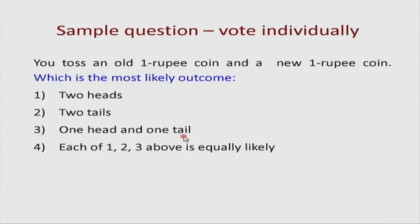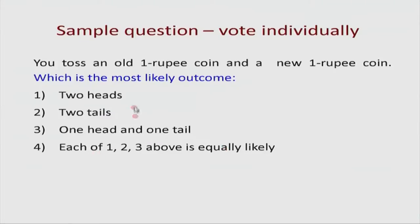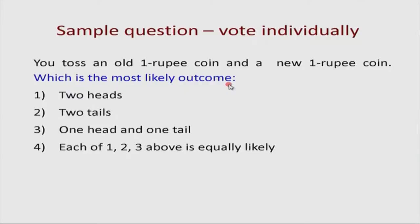We all know that three is the right answer. Why is it the right answer? This is a question on counting and probability. It is very likely that many students will pick number four because it looks like a probability question where heads or tails are equally likely. But if you simply write down the different possible outcomes — you have two coins, each can take a head or a tail value, so there are two times two, four possible outcomes — just list them and you will know what the right answer is.